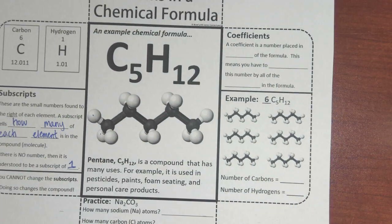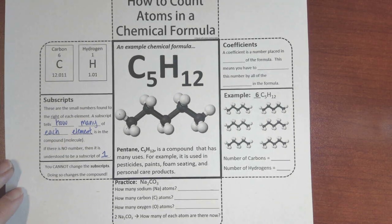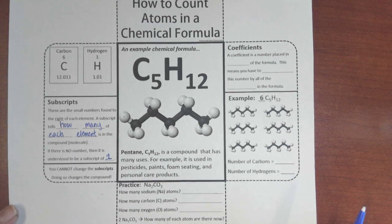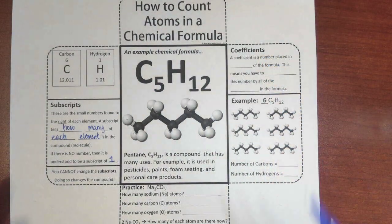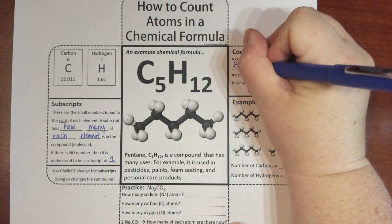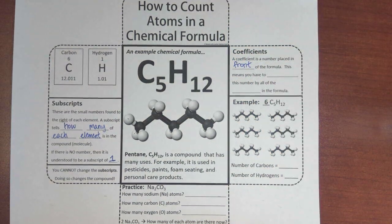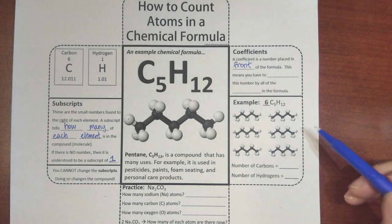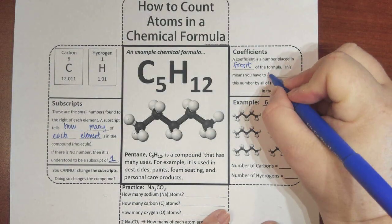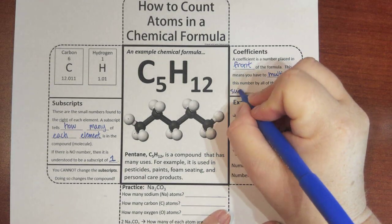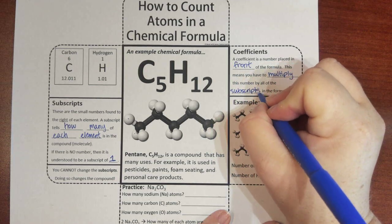Now we're going to talk about another number called a coefficient. A coefficient is a number placed in front of the formula. This means you have to multiply that number by all of the subscripts in the formula.